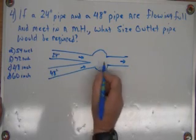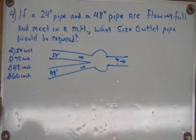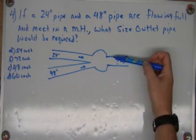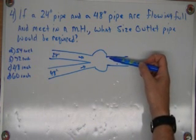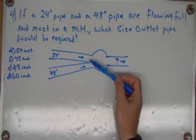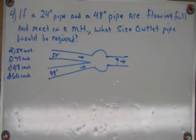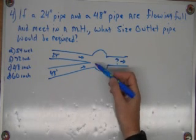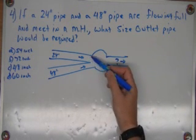So there's a 48-inch, and then this one is, we don't know. So what we need to do is make sure that this pipe that leaves the downstream manhole, that downstream side of the manhole, has to be big enough to accommodate these two flowing full. So the area of this pipe is going to have to be able to handle the area of both of these together.